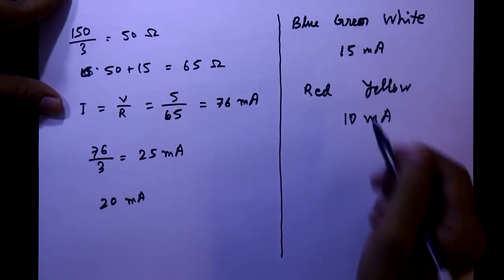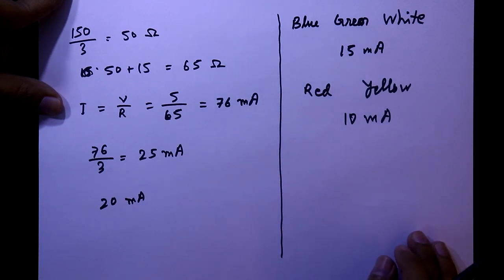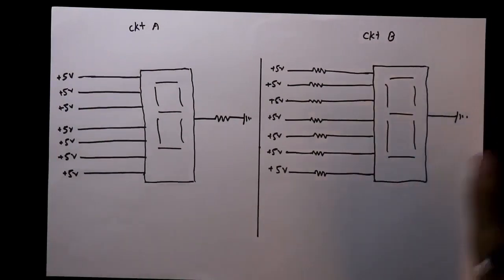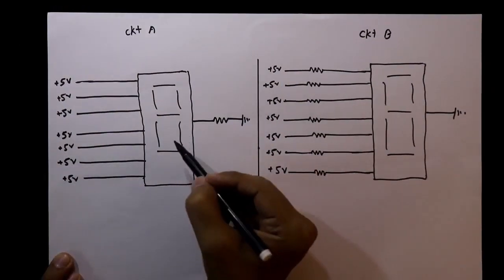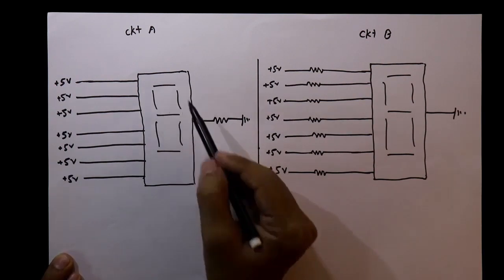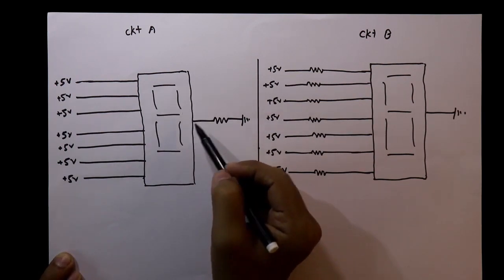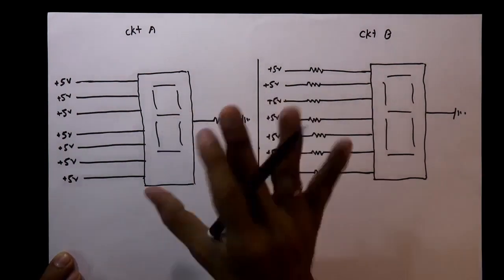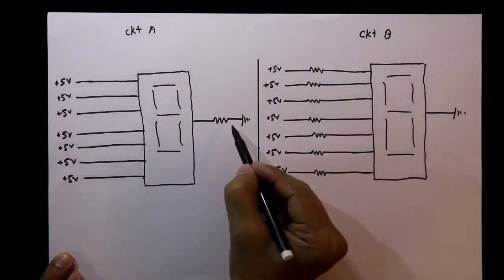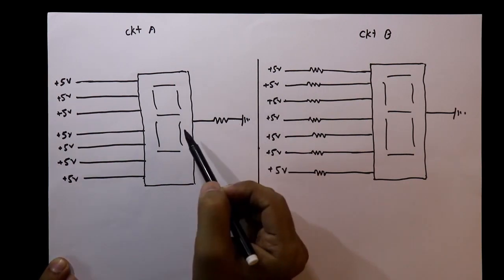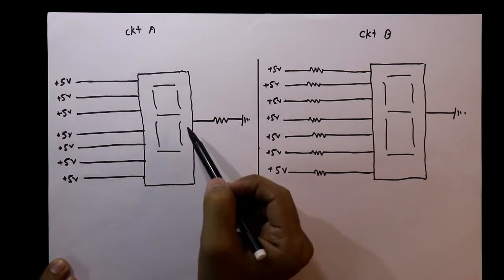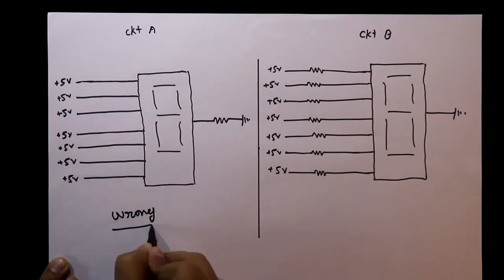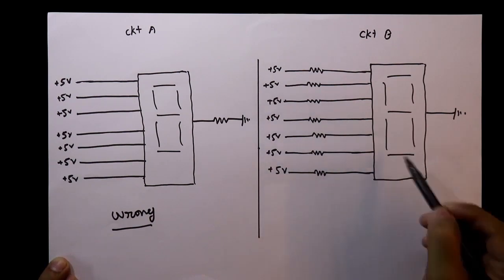According to the safe current values, you have to calculate your external series resistor. We cannot use this single-resistor circuit type because if you need the number 8, all LEDs should glow, but if you need number 1, only two LEDs should glow — current changes but the resistor is constant. This type of circuit will damage your display, so this circuit is wrong.